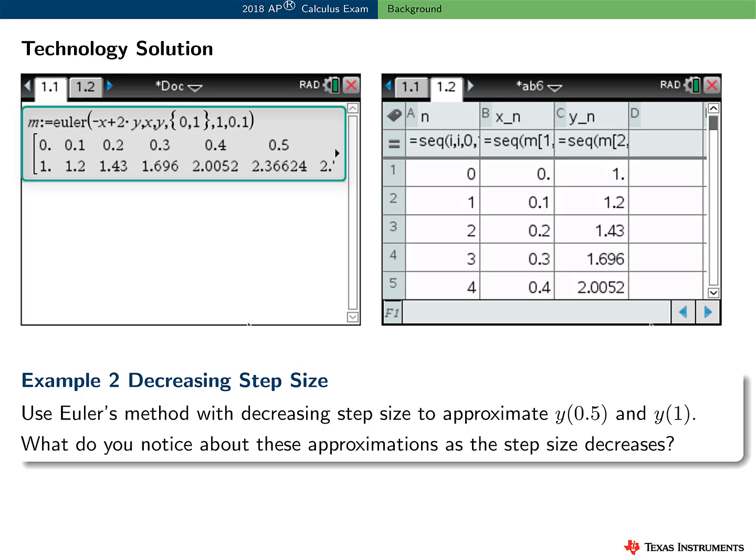The TI INSPIRE has a built-in function to help with Euler's method. On a calculator page, it produces a matrix where the first row contains the x sub i's, and the second row contains the corresponding y sub i's. On a lists and spreadsheet page, I simply extracted the two rows to perhaps make it easier to read, and I added a counter to indicate the step number.